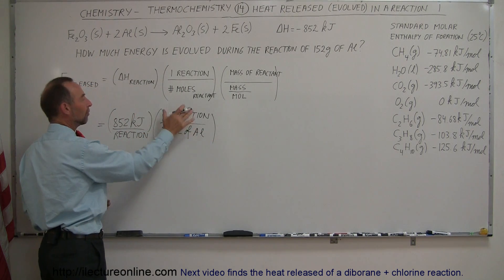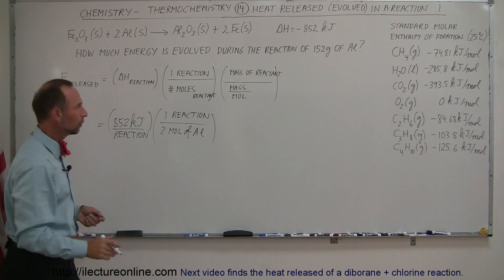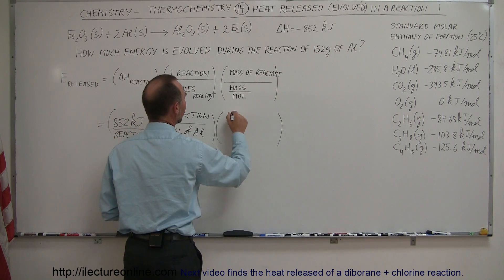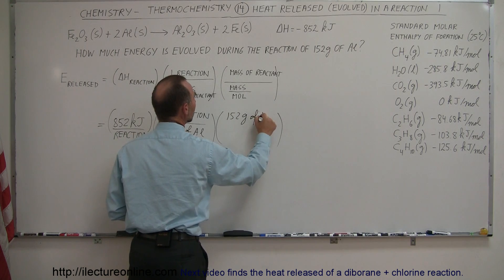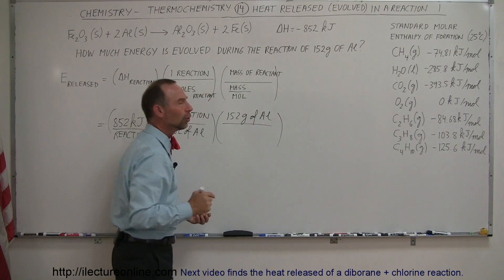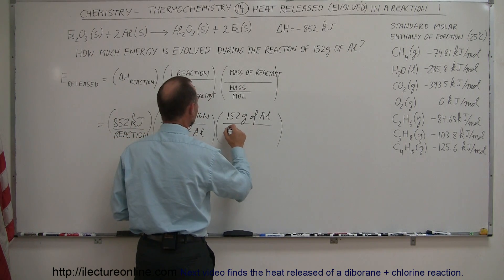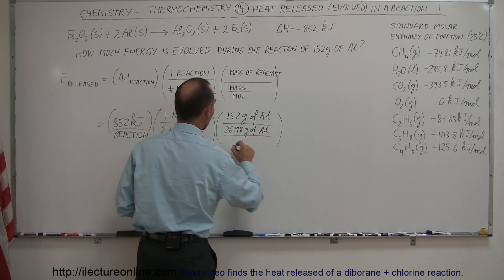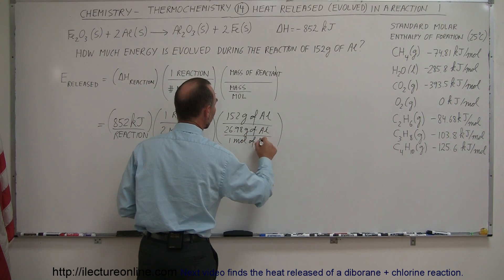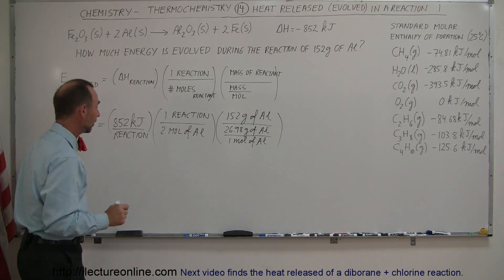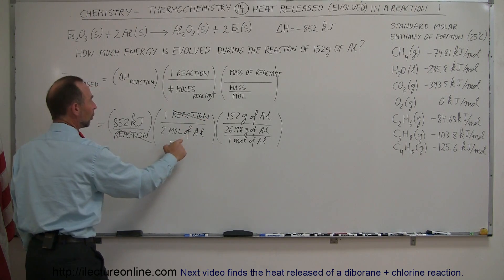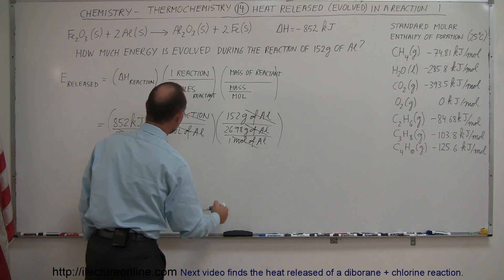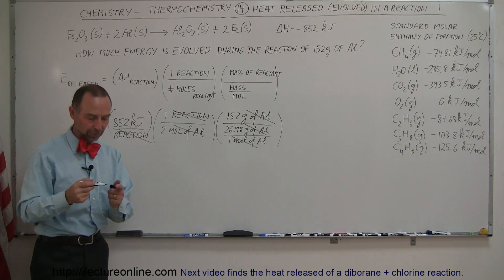That gives us a ratio: for each reaction, we consume two moles of aluminum. We multiply that by the mass of the reactant given, which is 152 grams of aluminum, and divide by the molar mass of aluminum — 26.98 grams per mole. Now, checking unit cancellation: reaction cancels out, moles of aluminum cancel, and grams of aluminum cancel, leaving us with just kilojoules.